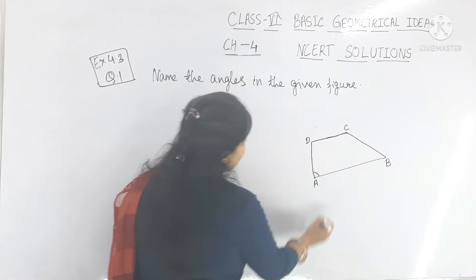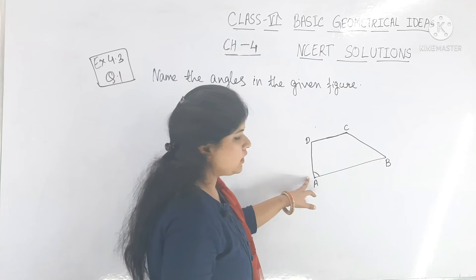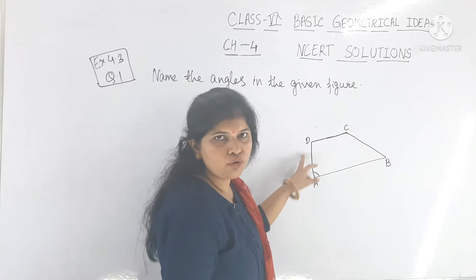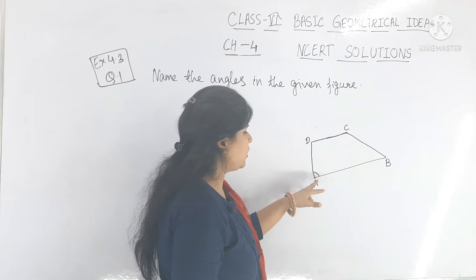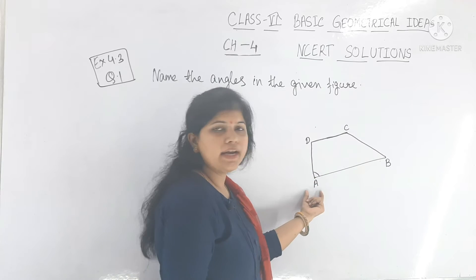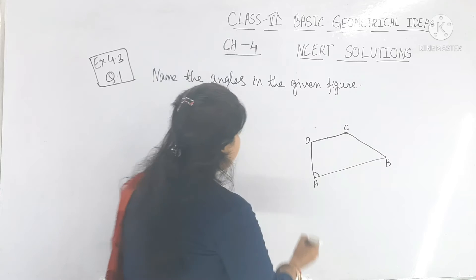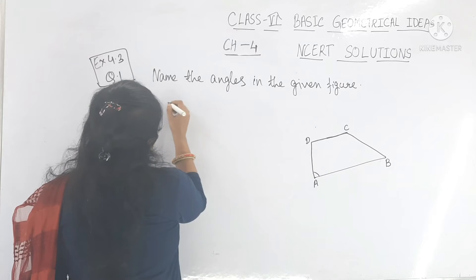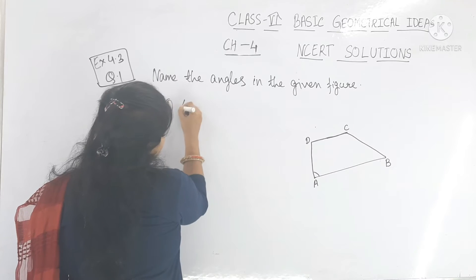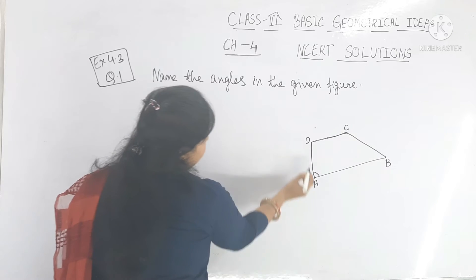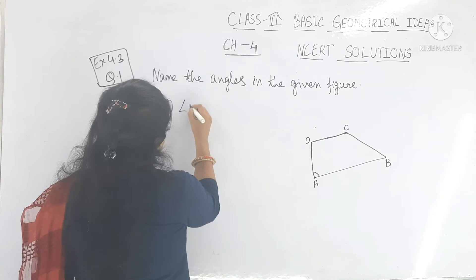We studied that the point of the angle should be in the middle when naming. So number 1 is angle DAB — the vertex A should be in the middle.